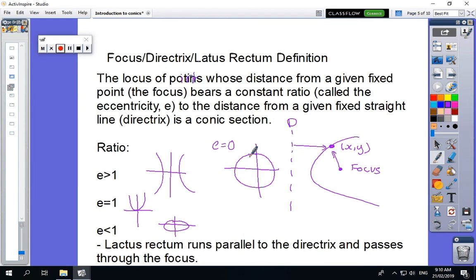So the other thing we need to know is about the latus rectum. It's not a rude word, it's just what it's called. It runs parallel to the directrix and passes through the focus. So the latus rectum of our thing here would be a line over here. And it does have some special features. So the first feature that is in a parabola, it is four times the focal length.